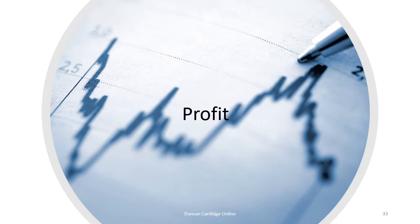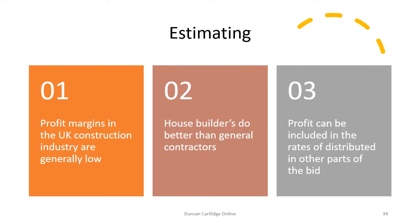And now to the all-important profit or margin. UK construction profit margins are generally low when compared to the amount of risk involved. Major top 10 contractors often operate on paper-thin margins and huge overdrafts.